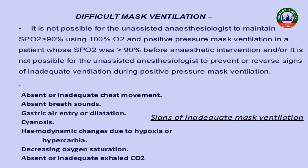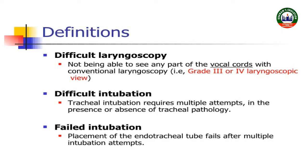Ab difficult laryngoscopy — difficult laryngoscopy means it is not possible to visualize any portion of the vocal cords with a conventional laryngoscope. Ek anesthesiologist conventional laryngoscope use karta hai lekin usse vocal cords ka koi bhi portion nazar nahi aata. Us scenario ko hum kehte hain difficult laryngoscopy.